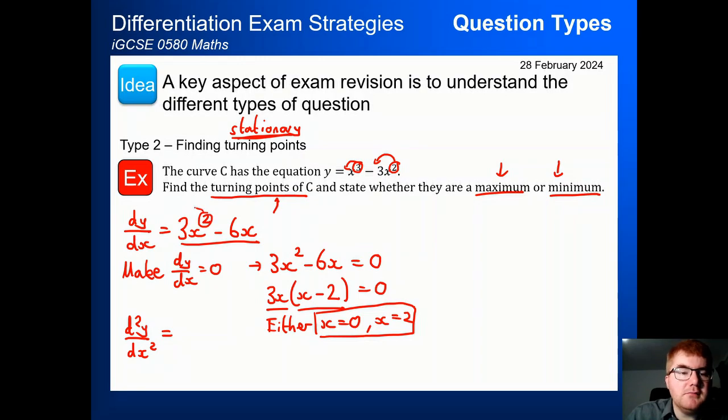So we take the 2, bring it to the back, we get 6x. And then with any linear term, we just read off the coefficient. So that's just minus 6. So we've got a double derivative. Now we're going to use these points, these x coordinates, x is 0 and x is 2.